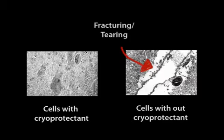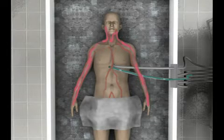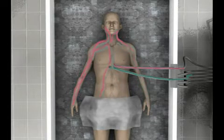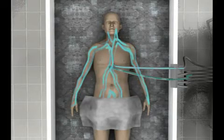To replace the blood with the cryoprotectants, tubes must be connected to major arteries of the body. When this is completed, a low concentration of cryoprotectant is circulated through the body for two minutes to flush out the remaining blood in the system.